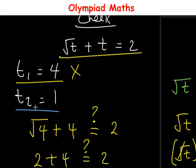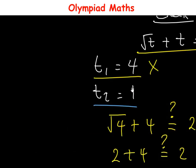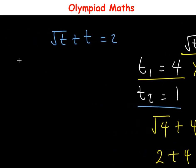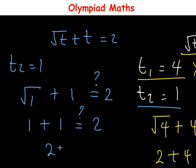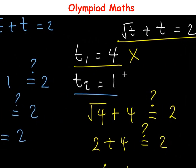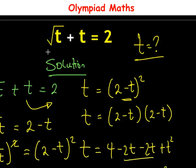Now let us test the other solution t₂ = 1. Inputting t = 1 into the equation: √1 + 1 = 1 + 1 = 2, and this is equal to 2. So t₂ = 1 is the correct solution.